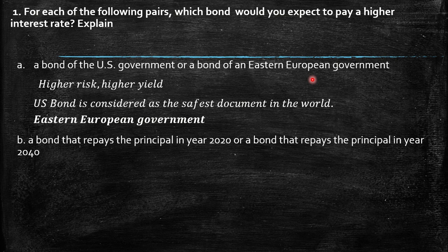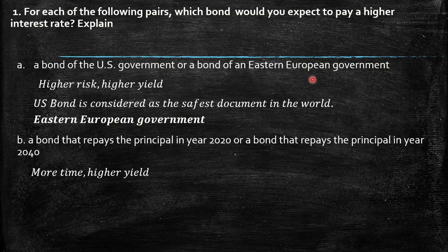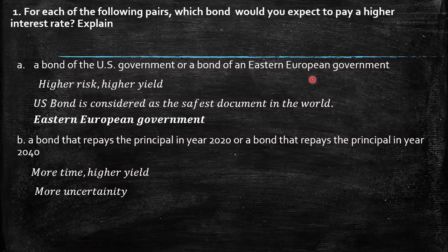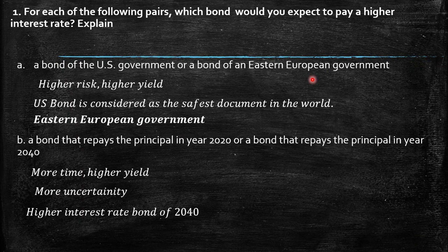The second pair: a bond that repays the principal in 2020 or a bond that repays the principal in 2040. The relevant factor here is the time frame. More time means higher expected yield, because there is greater uncertainty about the future — you cannot control that situation. So we expect a higher interest rate for the 2040 bond.